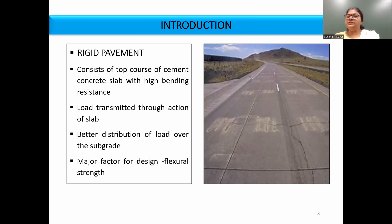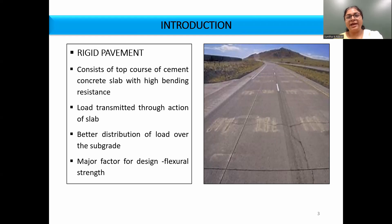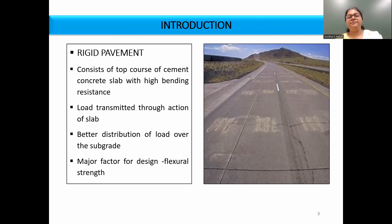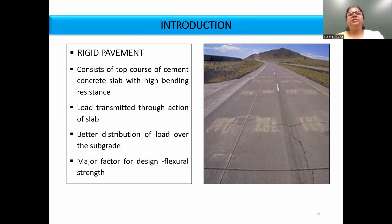Rigid pavement consists of a slab laid on a prepared subbase or subgrade. The difference between rigid pavement and flexible pavement is that in rigid pavement the load is resisted by grain-to-grain transfer. So the major factor in the design of rigid pavement is flexural strength, and the material commonly used for rigid pavement construction is concrete.